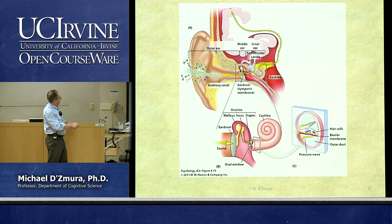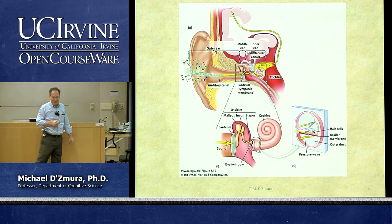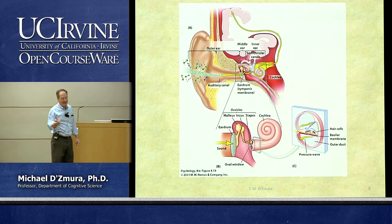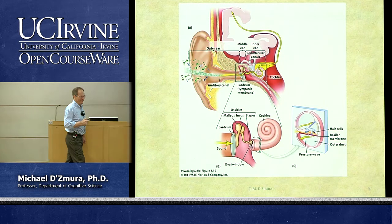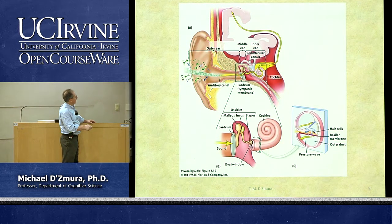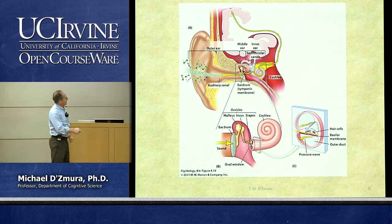The vibrations are transmitted in the middle ear through three bones: the malleus, the incus, and the stapes. The English terms are the hammer, the anvil, and the stirrup. So if you like Westerns — the hammer, the anvil, you're creating horseshoes, and then the stirrup, the guy starts riding the horse. In Latin: malleus, incus, stapes. This thing goes back and forth, the little bones jiggle, and the stapes is attached to the oval window of the cochlea.